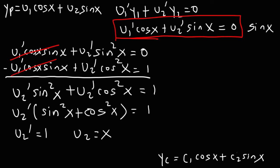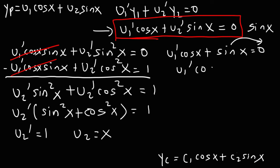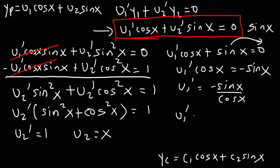Now we need u1 prime. Using the condition equation u1 prime cosine x plus u2 prime sine x equals 0, and replacing u2 prime with 1, we get u1 prime cosine x equals negative sine x. Dividing both sides by cosine x, u1 prime equals negative tangent x. Integrating both sides, the antiderivative of negative tangent is positive natural log of cosine x, so u1 equals ln|cosine x|.